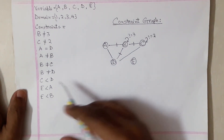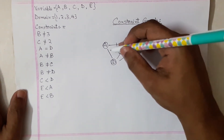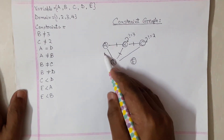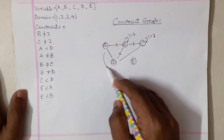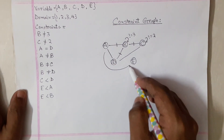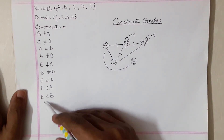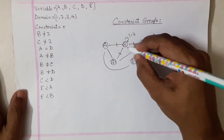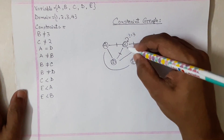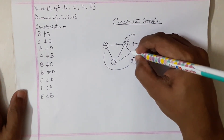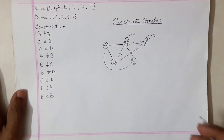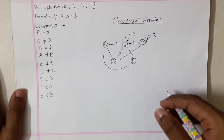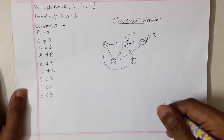For e less than a, you add a line between e and a. Similarly, e less than b — add a line between e and b. And that's pretty much it — that's how you draw a constraint graph.